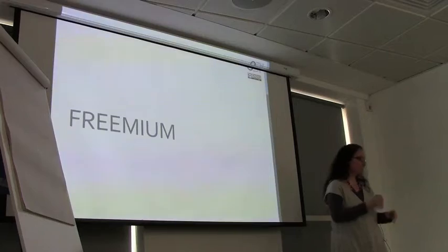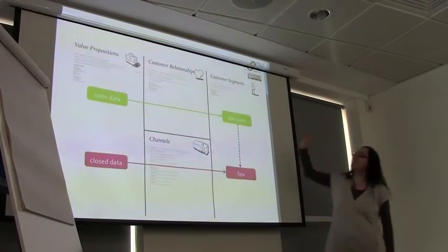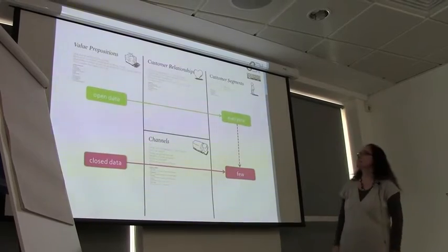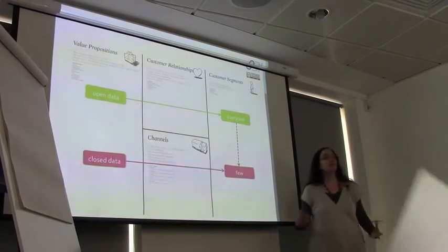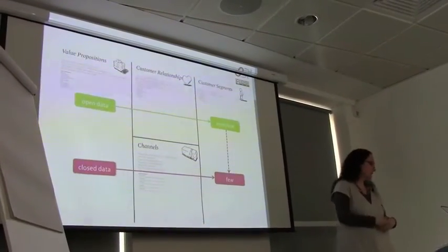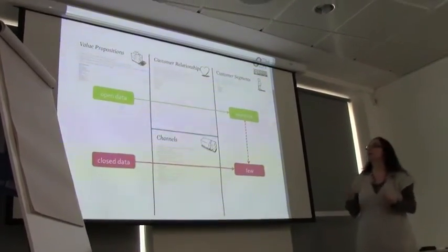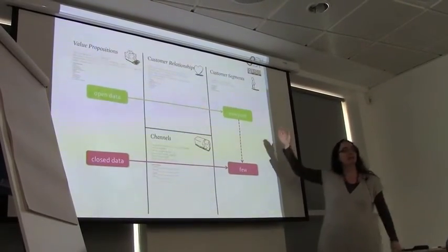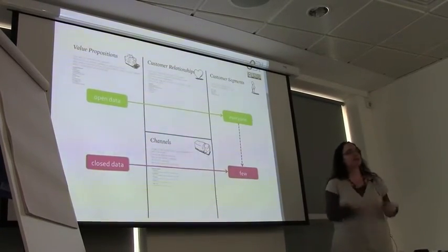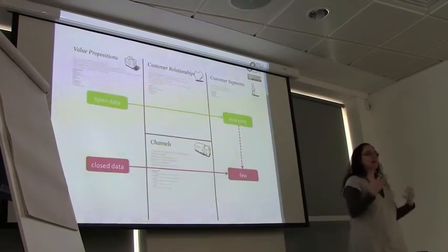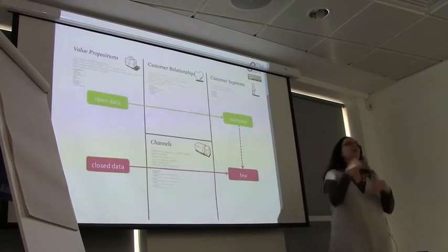In the freemium business model, you segment your customers into two sets: everyone who can access your open data, and then the few who are willing to pay for some extra value from your closed data. By providing that data for everyone as open data, you make it easy for people to move from the everyone category into the few category. You provide them with an easy on-ramp — they can start playing around with the data, get to know it, understand its benefits, start to incorporate it into their systems, and then you tell them they have to pay if they want that extra bit.